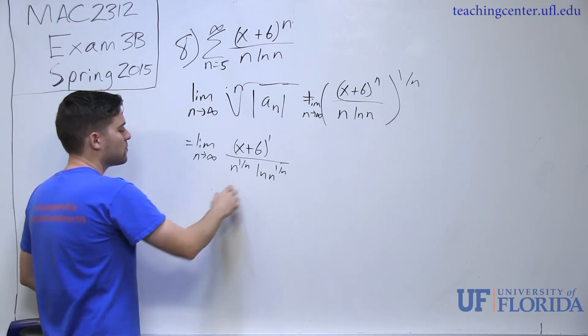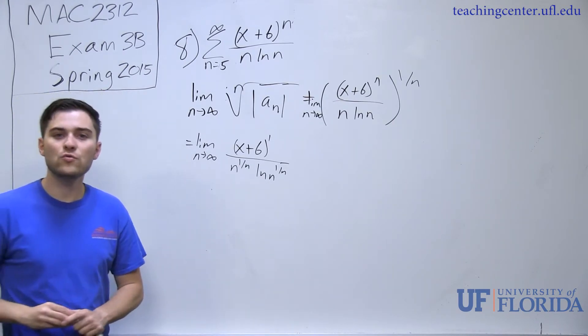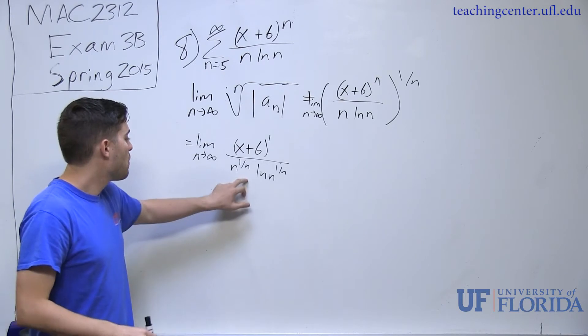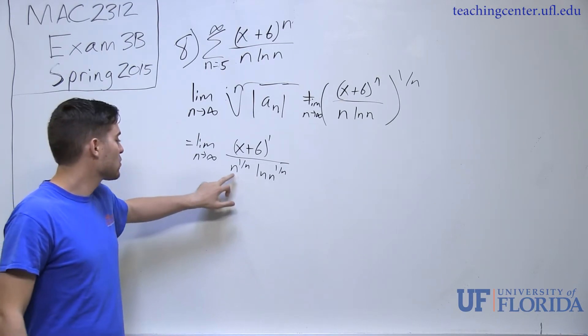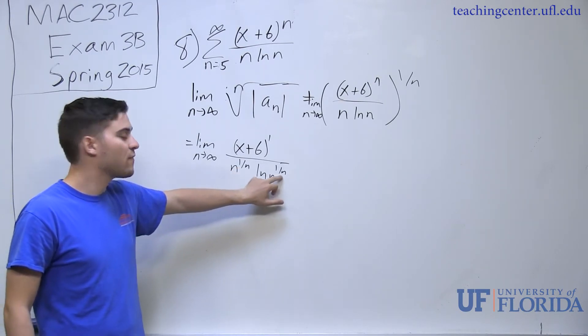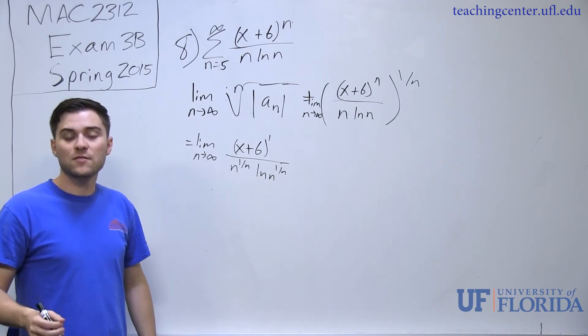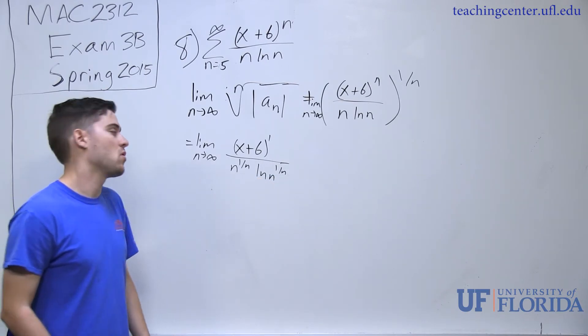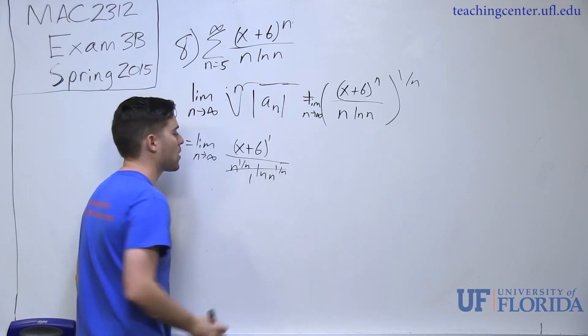Both of these terms, if you think back to the exam 2 material, both of these terms have limits of 1. As long as n is to a 1 over n and natural log of n is to a 1 over n, the limits of those as n approaches infinity is always 1. This whole bottom part is just 1.